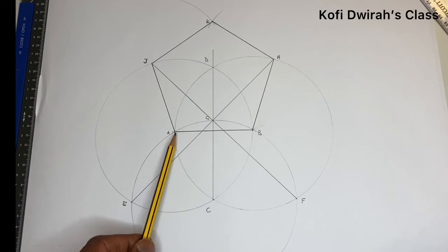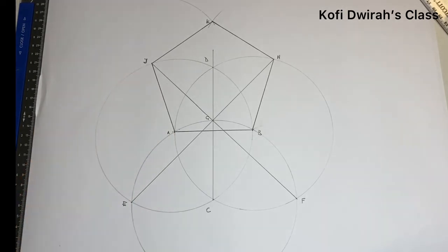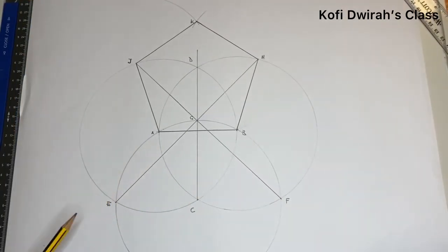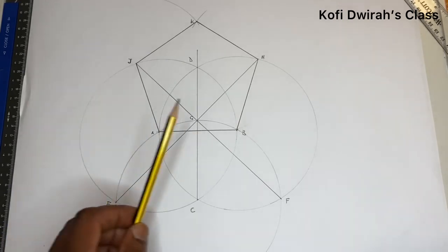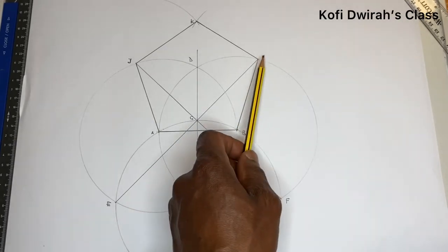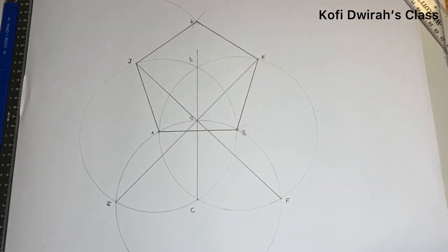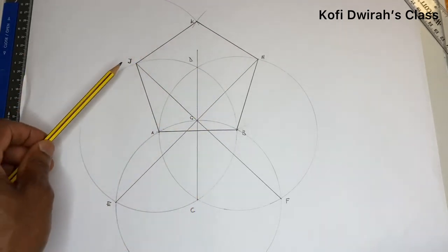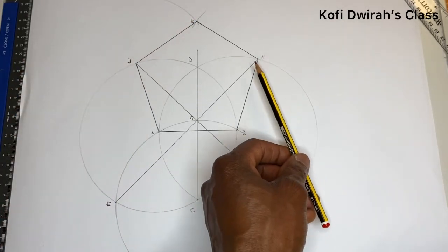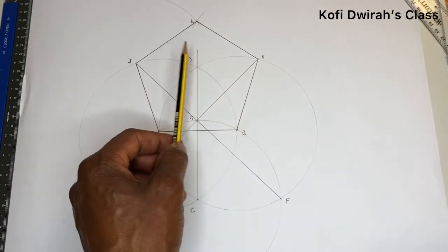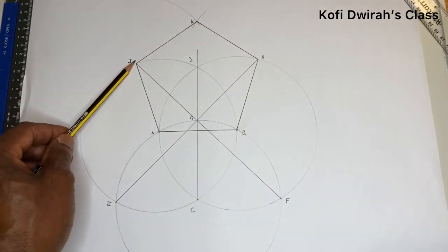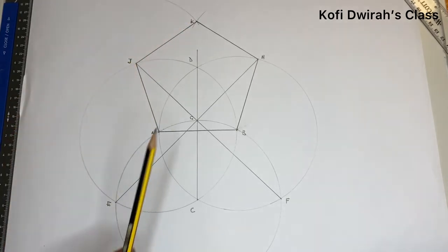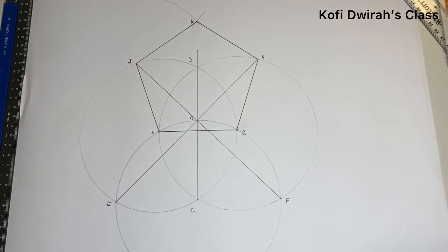From point E you draw a straight line through G to the circle. From F you draw another straight line through that point to the circle. That gives you J and H. Then you draw a line from A to J to give you another side of the pentagon, and you draw another line from B to H to give another side. With the same radius at point J you draw an arc, and at point H you draw another arc to get K. Then you draw a straight line from J to K and another line from H to K.